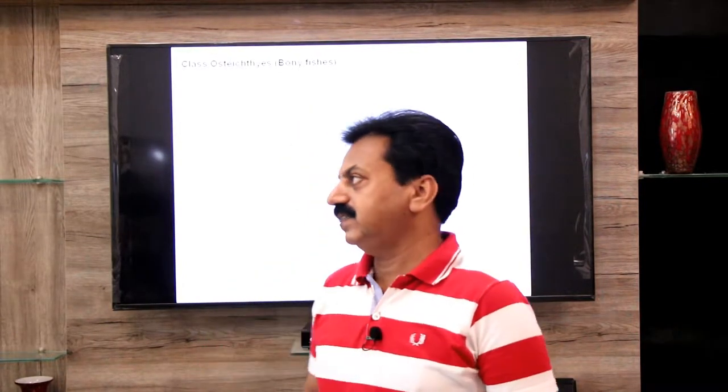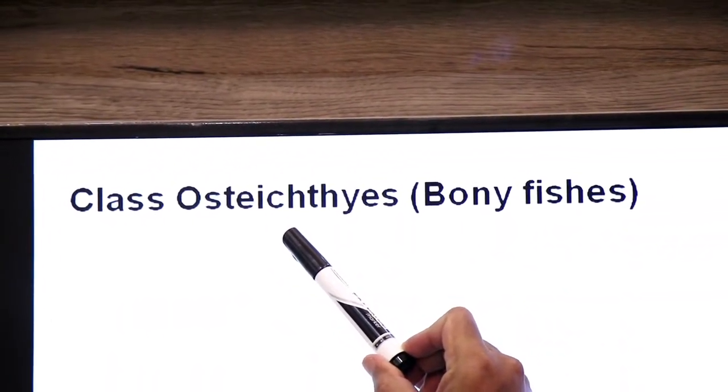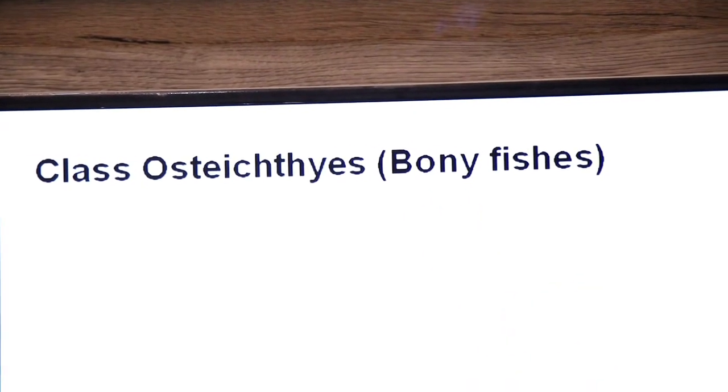Assalamu alaikum, namaste, hello dear students. Yesterday we discussed general characteristics of Pisces fishes and Chondrichthyes, cartilaginous fishes. Dear students, today we will discuss about bony fishes, Osteichthyes. So today, we are going to talk about Osteichthyes, bony fishes.